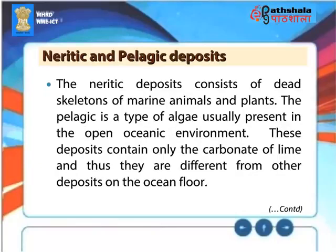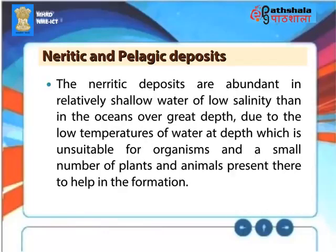The neritic deposits consist of dead skeletons of marine animals and plants. The pelagic is a type of algae usually present in the open oceanic environment. These deposits contain only the carbonate of lime, and thus they are different from other deposits on the ocean floor. The neritic deposits are abundant in relatively shallow water of low salinity, rather than in oceans over great depth, due to the low temperatures at depth which are unsuitable for organisms, with a small number of plants and animals present to help in their formation.